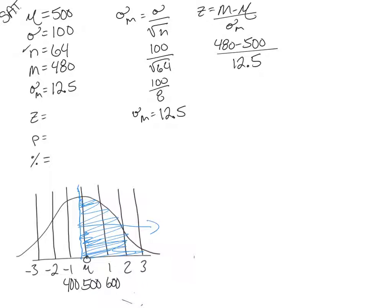So what is that, negative 20 divided by positive 12.5, so we have a Z score of negative 1.6, so right about there.